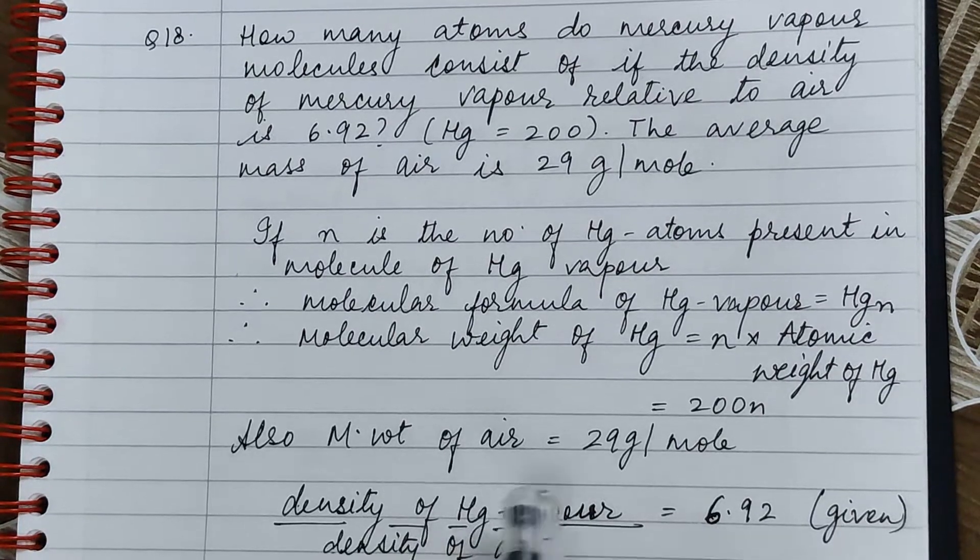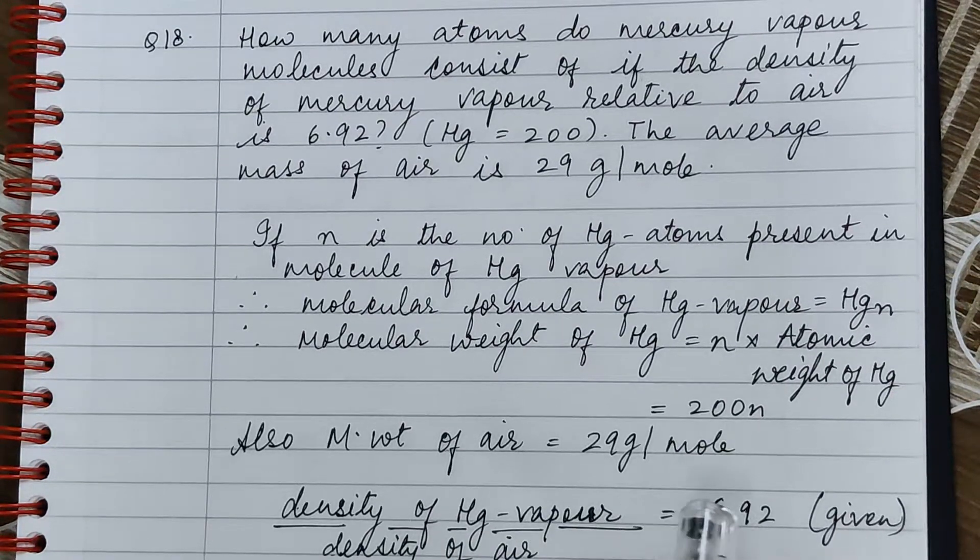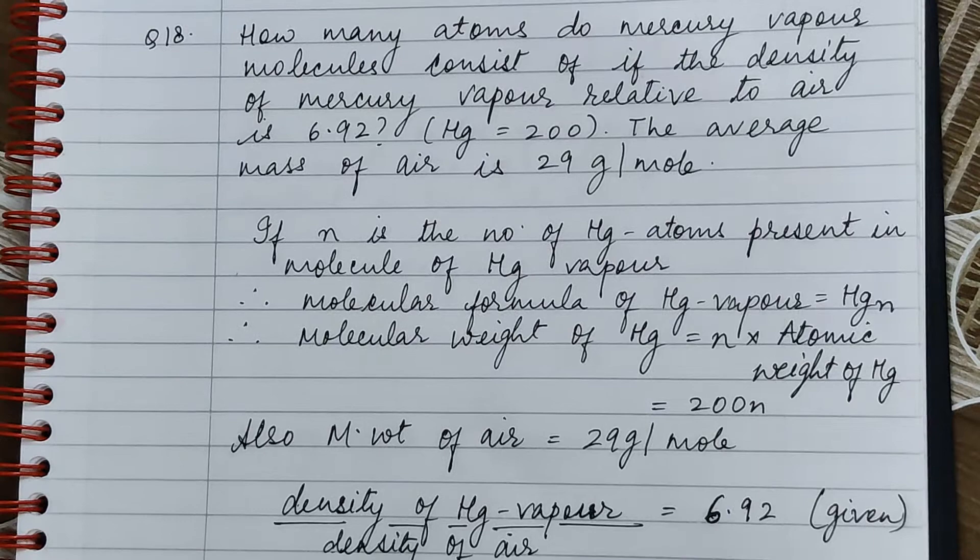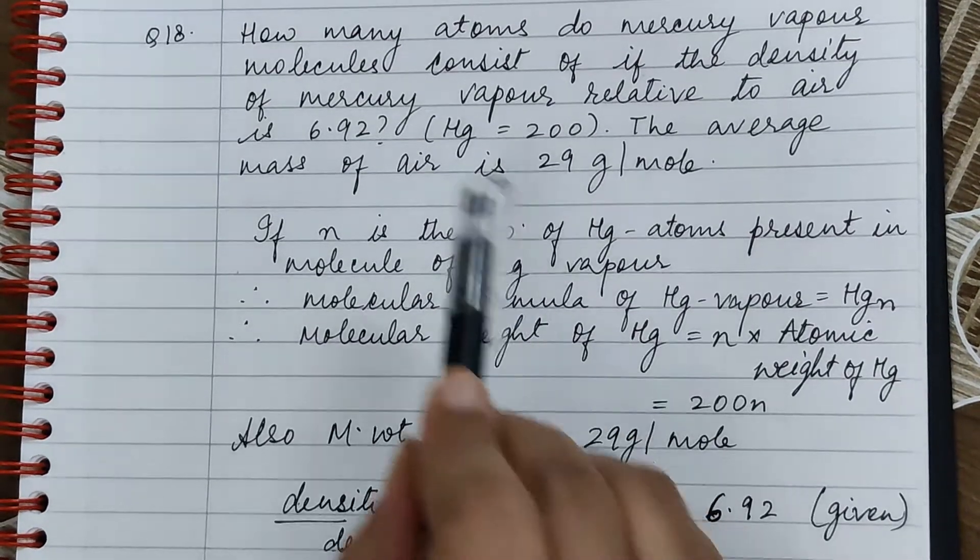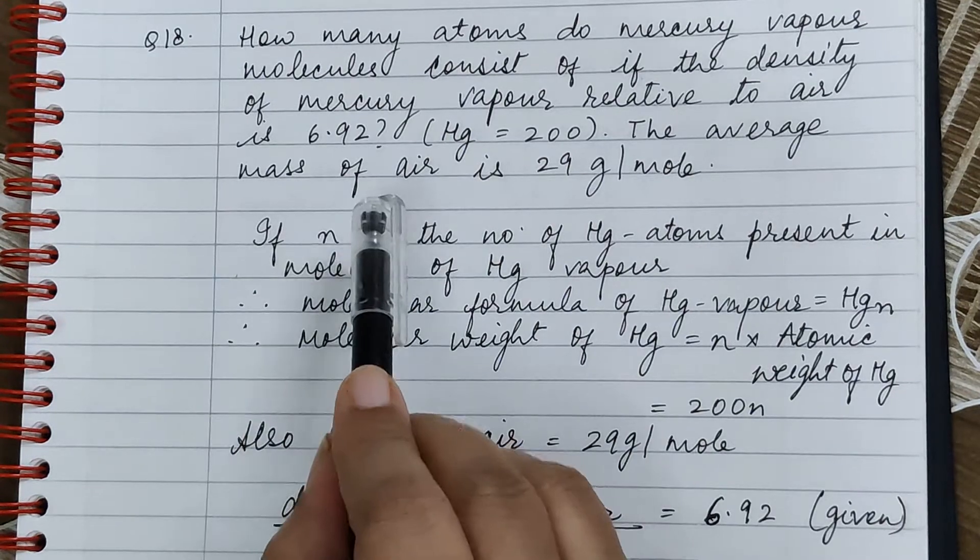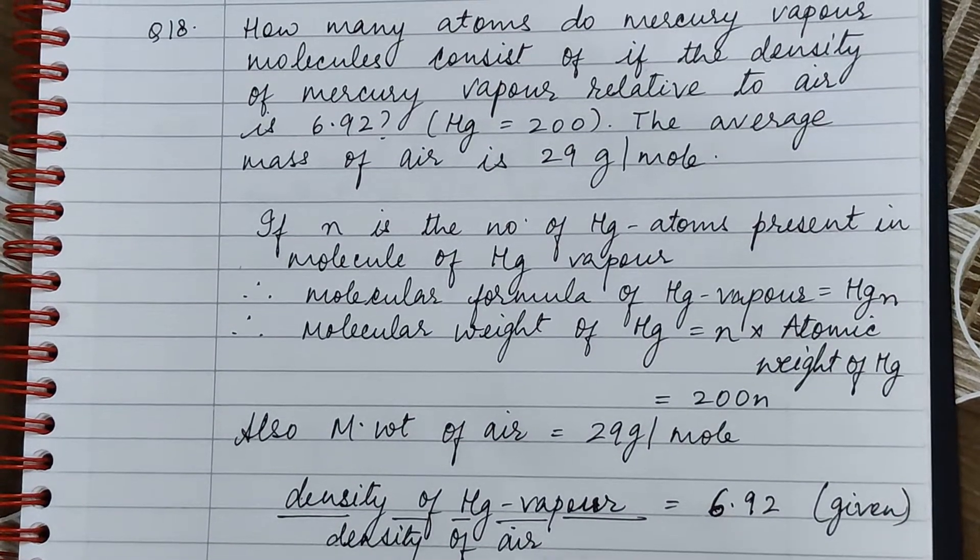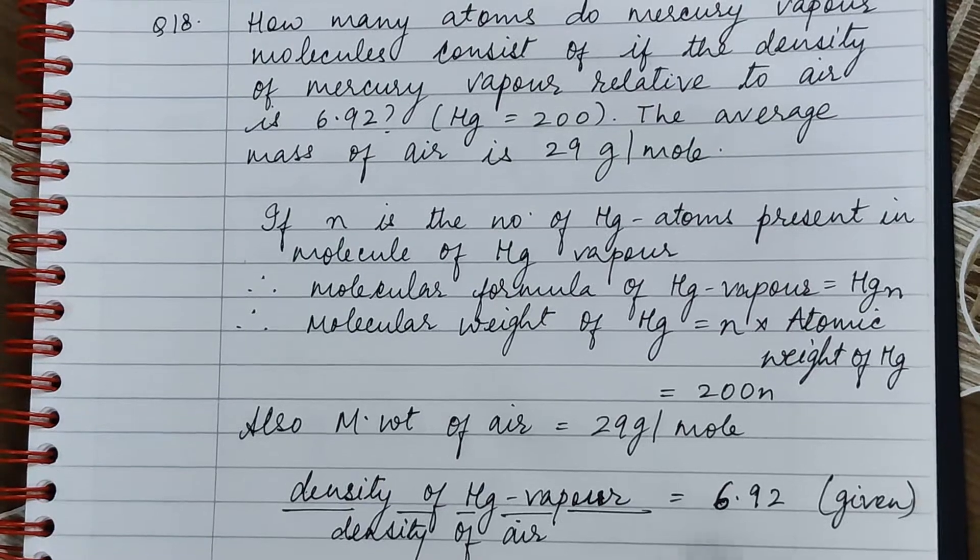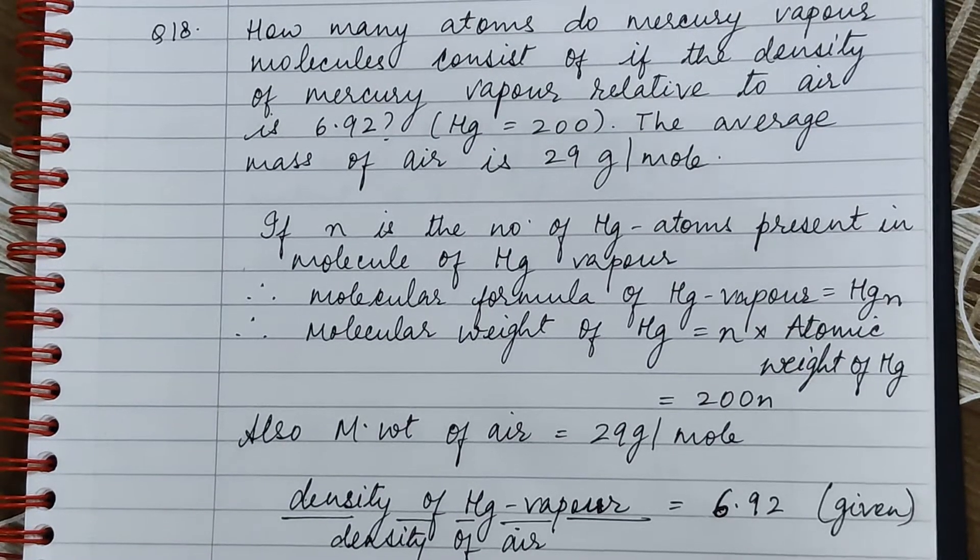Molecular weight of air is equal to 29 grams per mole, and it is given that density of mercury vapor relative to air is 6.92. So density of mercury vapor divided by density of air is equal to 6.92.